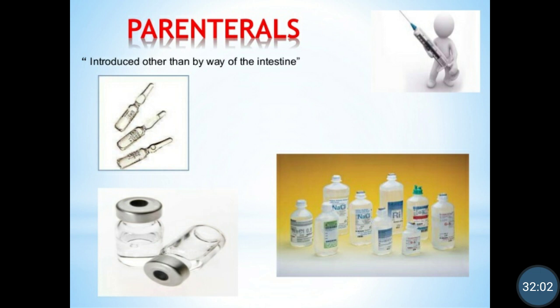The next type of dosage form is parenterals, which come under the category of sterile dosage forms. The parenteral route of administration means para — outside, and enteron — intestine. Drugs administered outside the intestine are known as parenterals. Different parenteral routes include subcutaneous, intra-arterial, intravenous, intradermal, intrathecal, and intramuscular — at these different sites, the drug is injected so it directly enters the bloodstream.